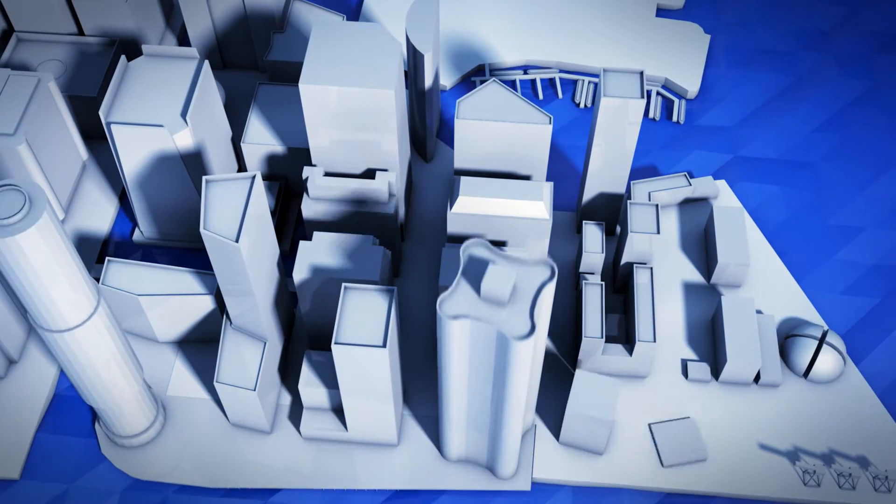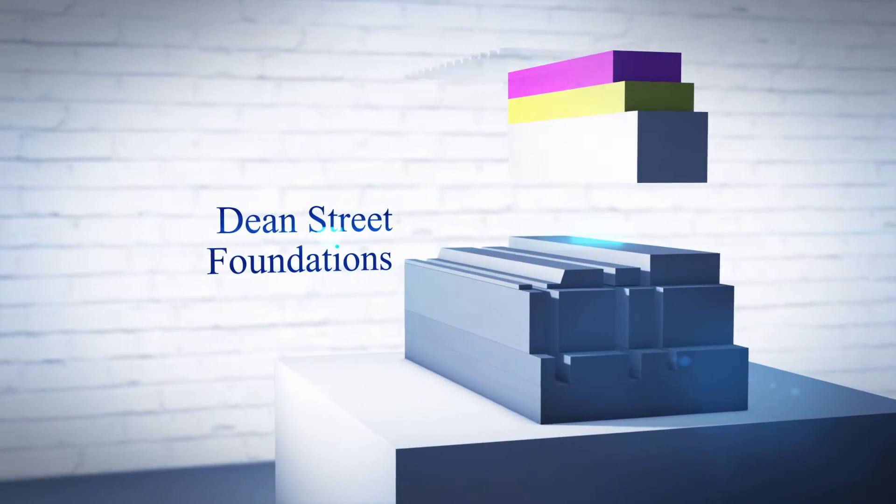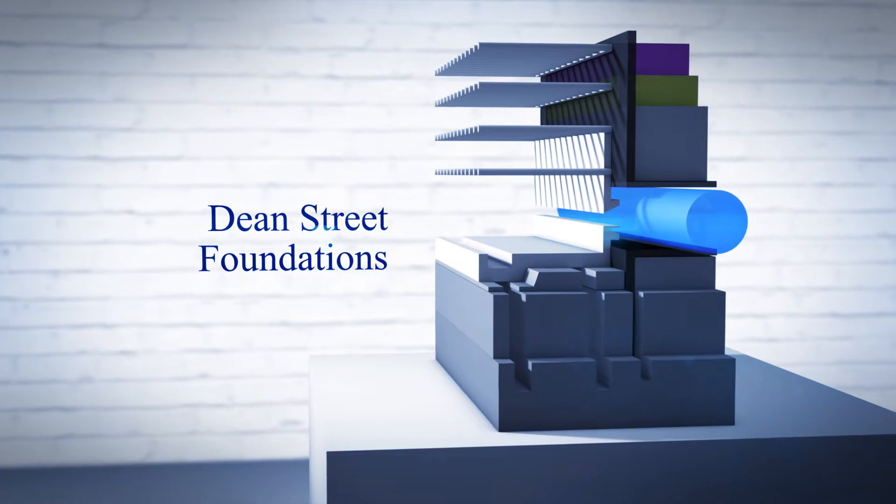We've now moved on from the Crossrail station box, but we're working at Dean Street, and we saw an opportunity to provide the observational method there where we got down to the third level of excavation, about 10 metres deep.